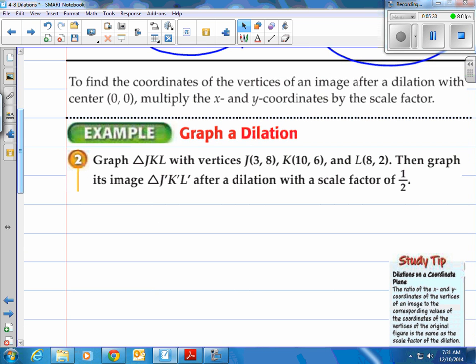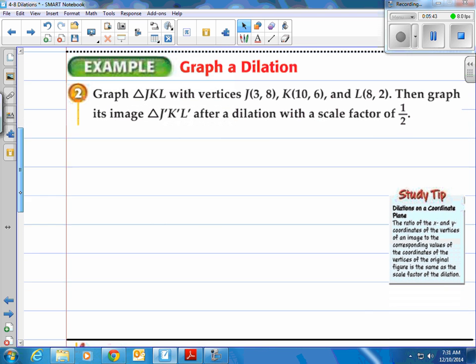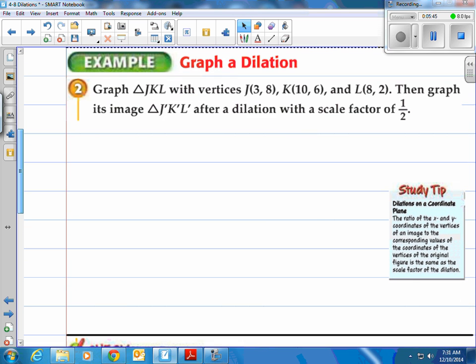Let's try it out. It says to find the coordinates of the vertices of an image after dilation, with center zero zero, multiply the X and Y coordinates by the scale factor. Again, just reiterating what we've been discussing here as we go through.